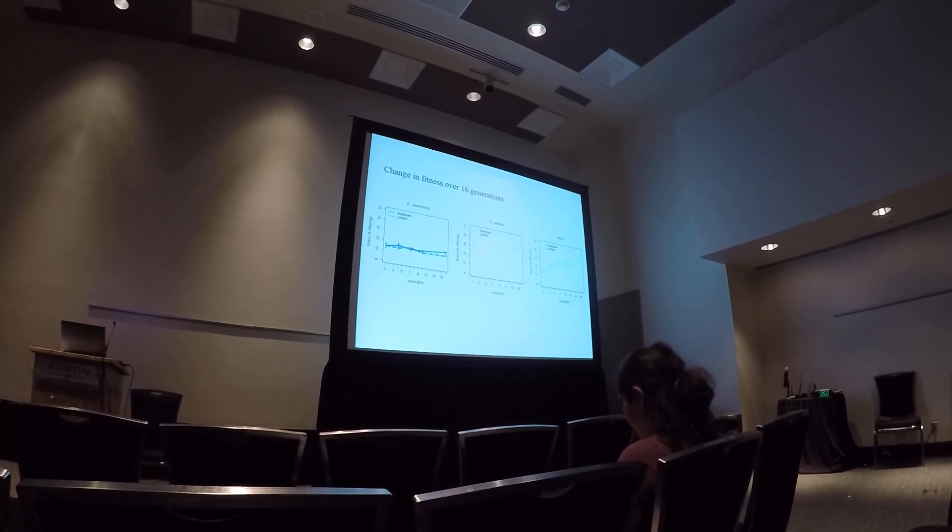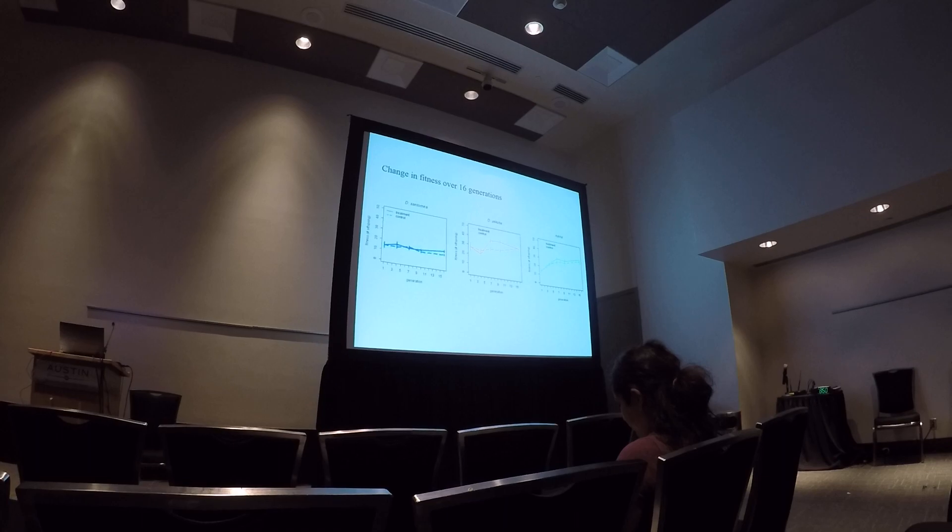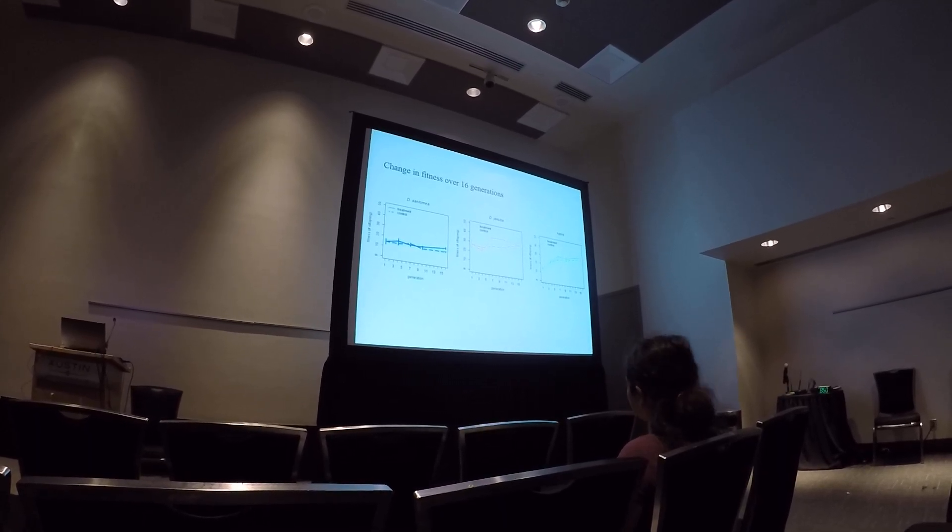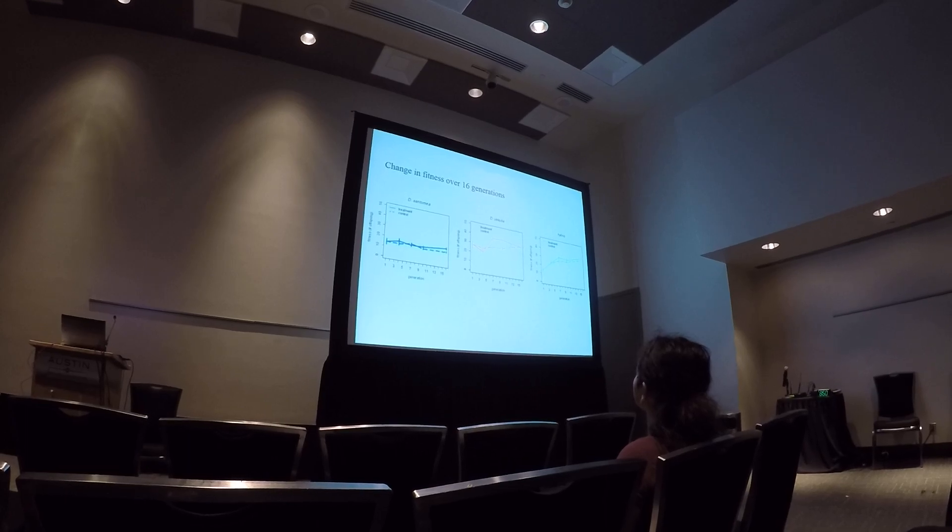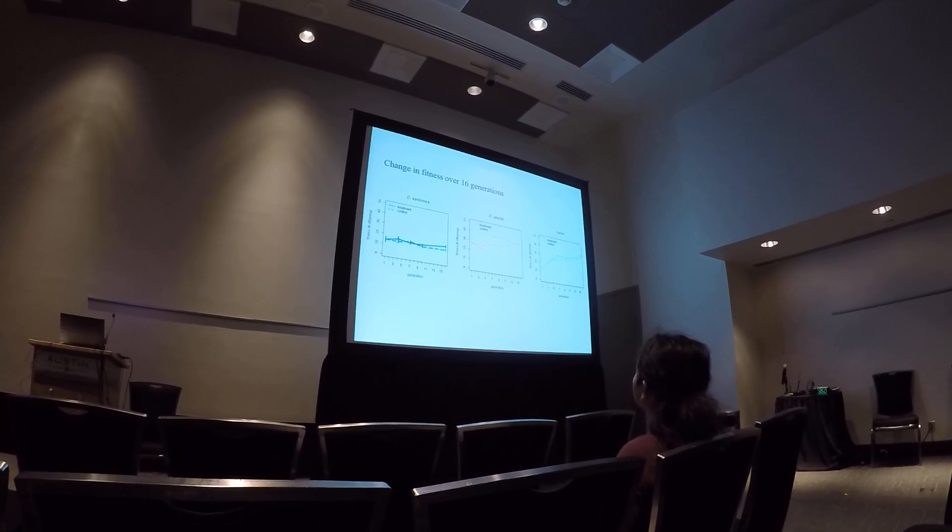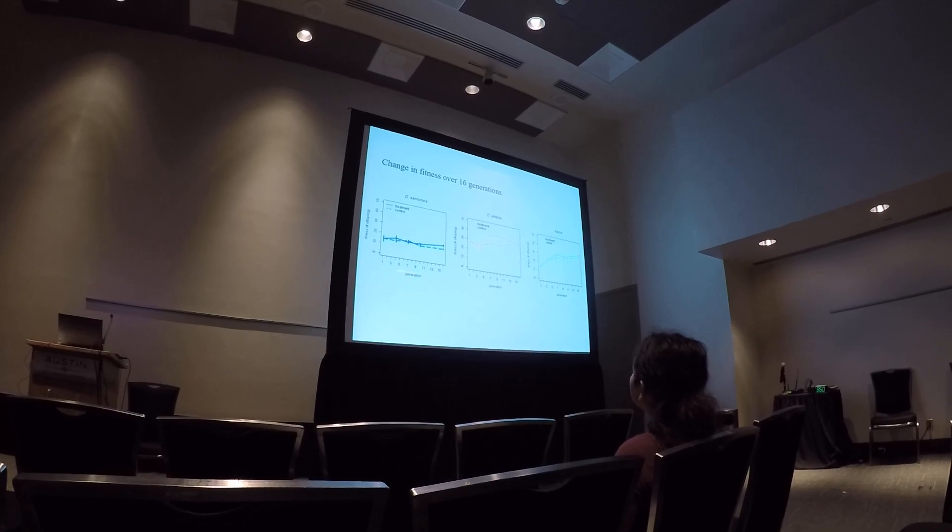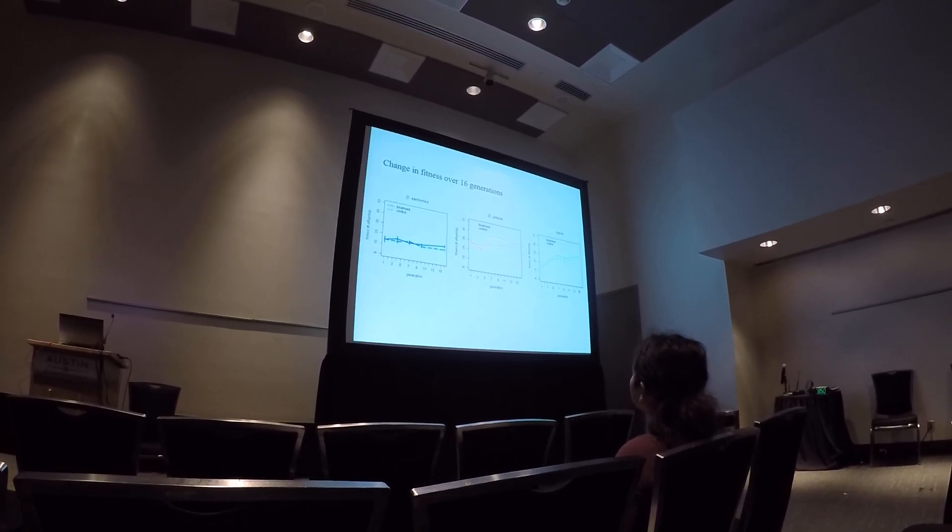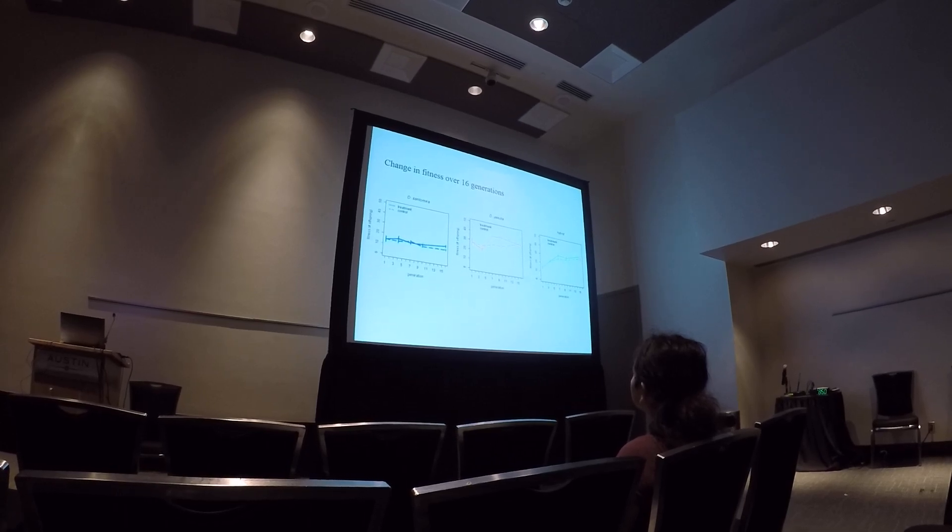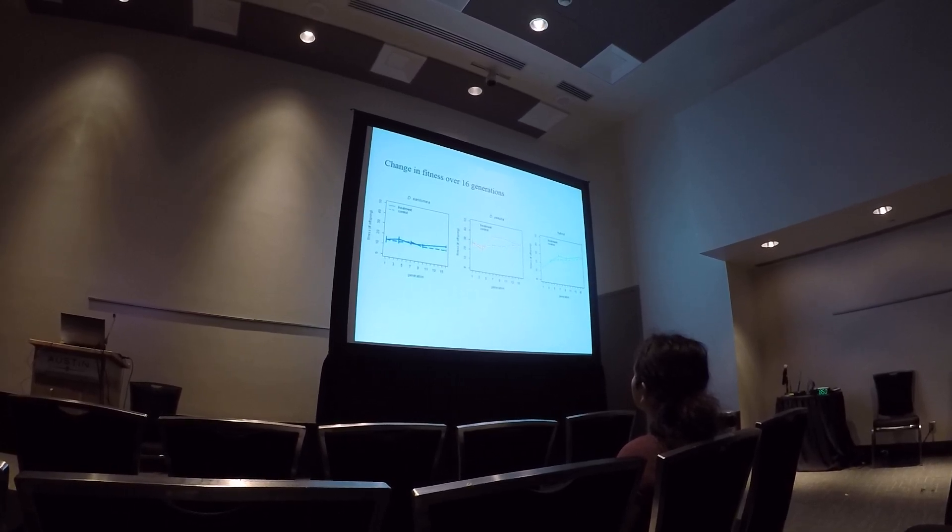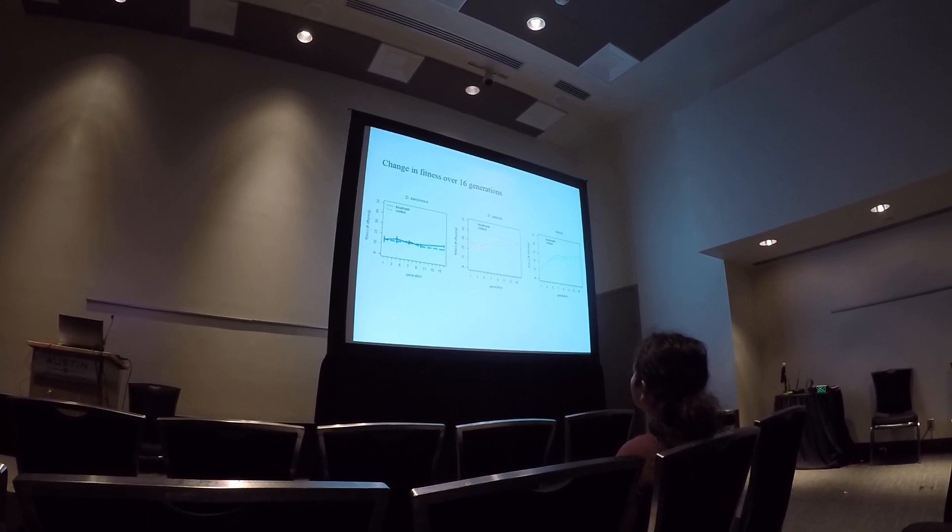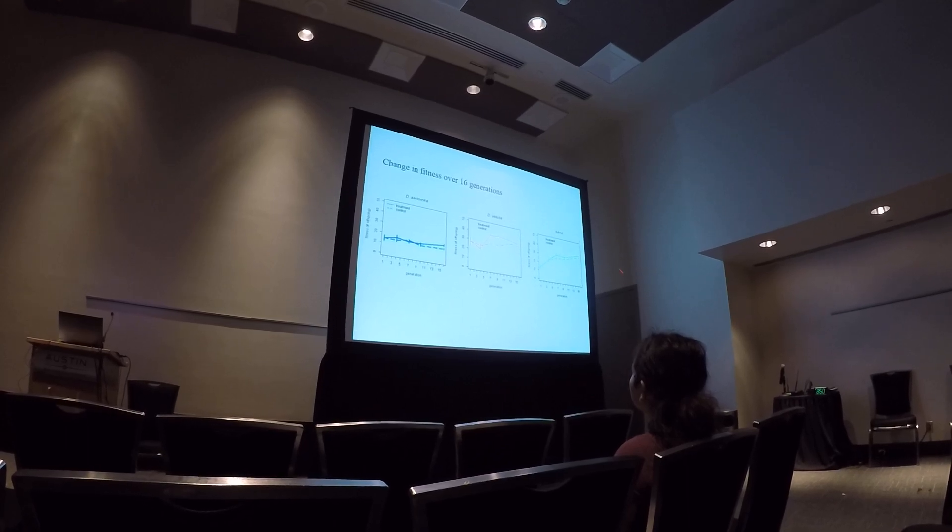So we look at this changing through time. This is fitness in the salt environment through time for both the treatment populations, so the ones that were raised in salt or maintained in salt, and the control populations, controls shown in the dotted dash lines, over 15 generations, or 16 generations of evolution. And we don't see any strong adaptation in either of the parental species. So there's no strong differentiation between the dotted and salt lines at the end of the experiment.